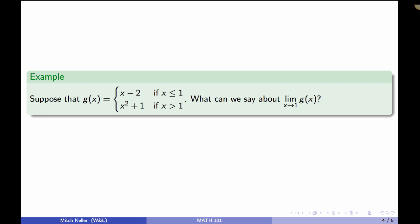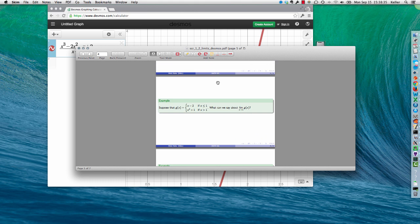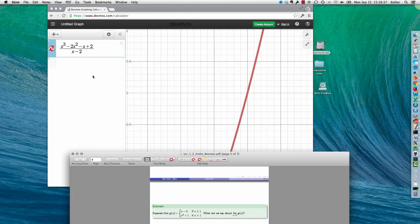Because we have two parts. We have a definition for what happens when x is less than or equal to 1, and we have another rule that defines how to calculate g(x) when x is greater than 1. And so we can do this in Desmos pretty nicely.